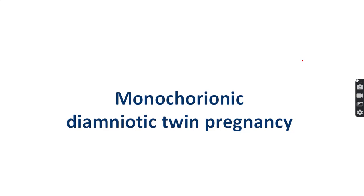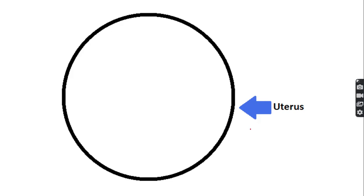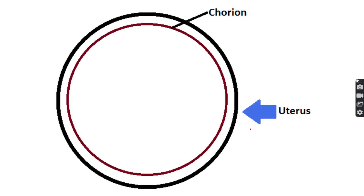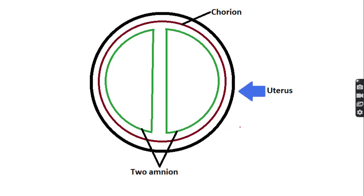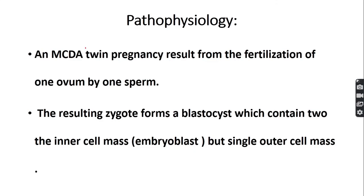Welcome to the Easy Human Anatomy channel. In this video, I discuss monochorionic diamniotic twin pregnancy. It is a type of twin pregnancy where each twin has its own amniotic sac but both share one chorion — consisting of one chorion, two amnions, two fetuses, and a single placenta.